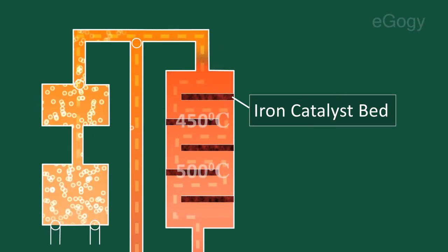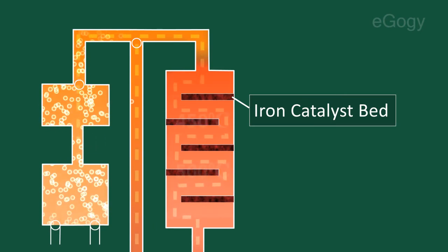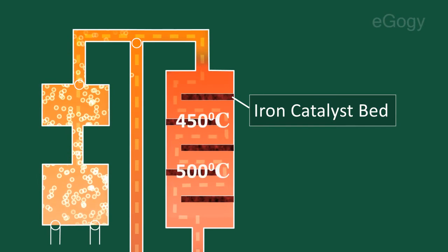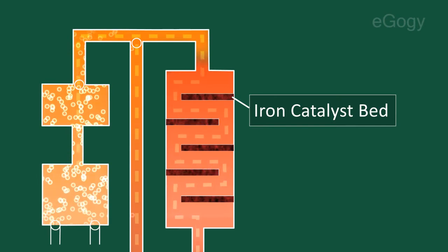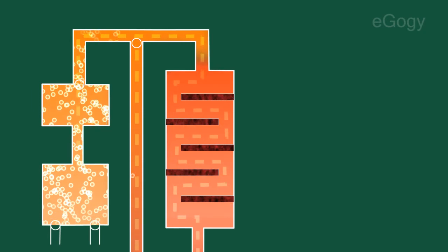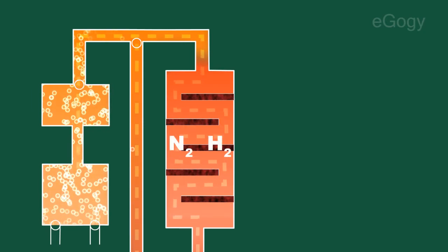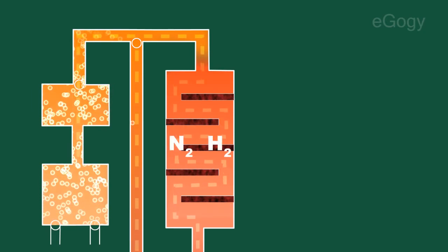450 to 500 degrees Celsius is a compromise temperature producing a reasonably high proportion of ammonia. Under these conditions, hydrogen and nitrogen react to form ammonia.